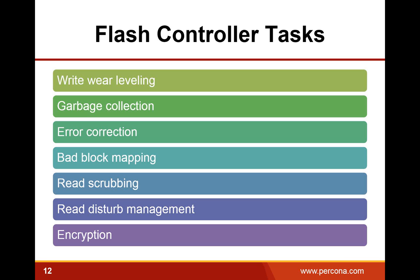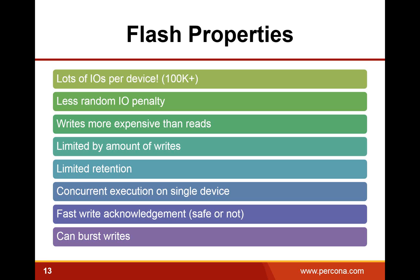There are also techniques like error correction, bad block mapping, and read scrubbing, where the device reads in the background to detect any triggering of error correction. There is an interesting property specific to flash called read disturb management: if you read a cell a large number of times, adjacent cells may leak charge and may not be readable over time. Flash controllers must track how many reads have been done from a given cell, and if significantly high, may need to reprogram that cell to restore its charge.